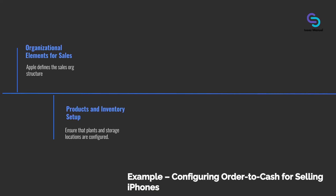Next is products and inventory setup: ensure that plants and storage locations are configured. Apple might have plant US10 as the central warehouse for phones. A config activity — define plant US10 and assign to company code AP01 — is completed. Also, define a shipping point and link it to the plant. For example, shipping point US10 for the warehouse. This is needed so the system knows from where deliveries will ship.